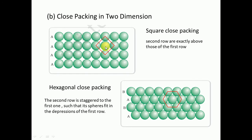If we calculate the coordination number for square close packing, we see one atom on top, two atoms on the sides, and one on the bottom as neighboring atoms touching it. These four neighbors form a square shape around the atom. That's why this AAA-type arrangement is called square close packing, where each row is exactly above the previous one.